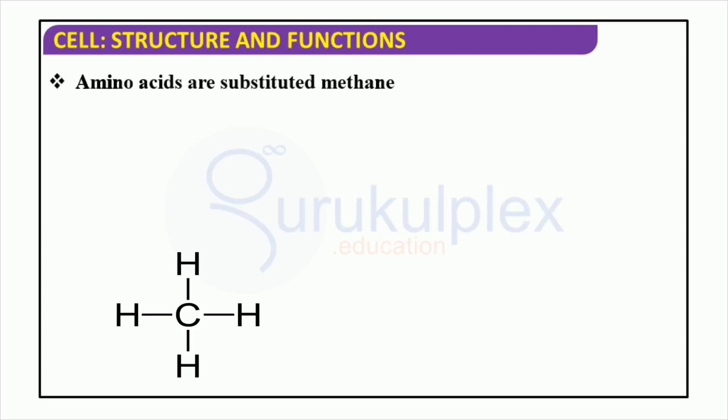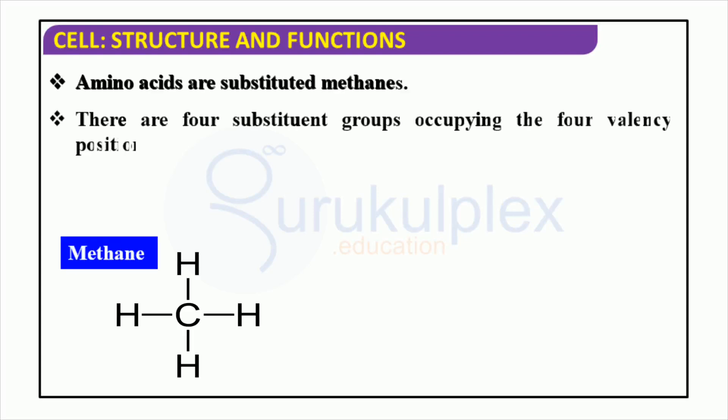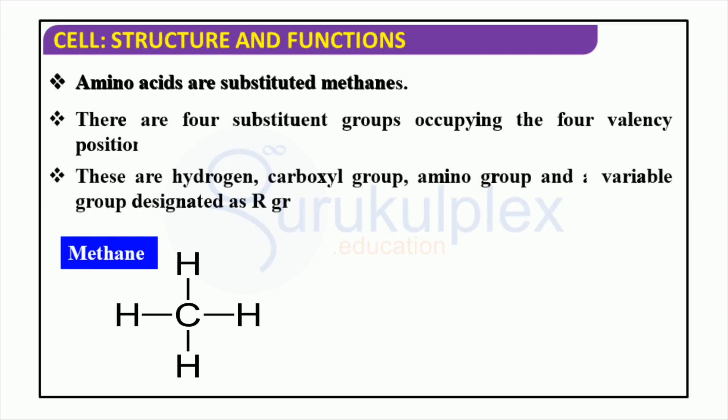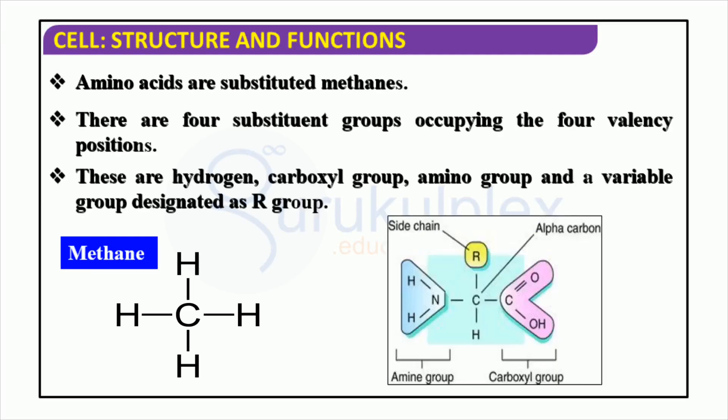Amino acids are essential for the functioning of living organisms, as they are the building blocks of all proteins. Composed of carbon, hydrogen, oxygen, and nitrogen atoms, as well as an R group which can be different from one amino acid to the next, they form so-called substituted methanes, with each of the four valence positions — hydrogen, carboxyl group, amino group, and the R group — being of great importance to form the structure of proteins.